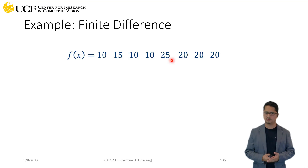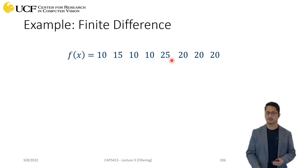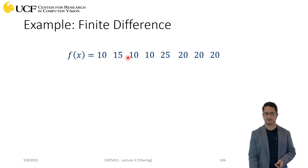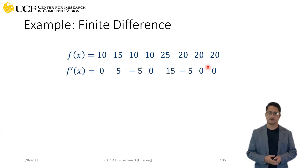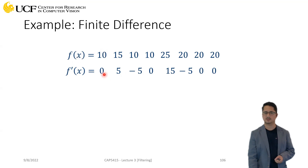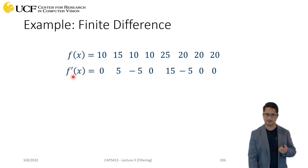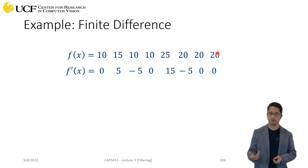Let's compute finite differences in a concrete example. f(x) is a one-dimensional function with values changing as we move from left to right. Computing backward difference: at each location, subtract the previous value — that gives five, then negative five, then zero (10 minus 10), and so on. This second row is the first derivative of f(x), computed using finite difference.